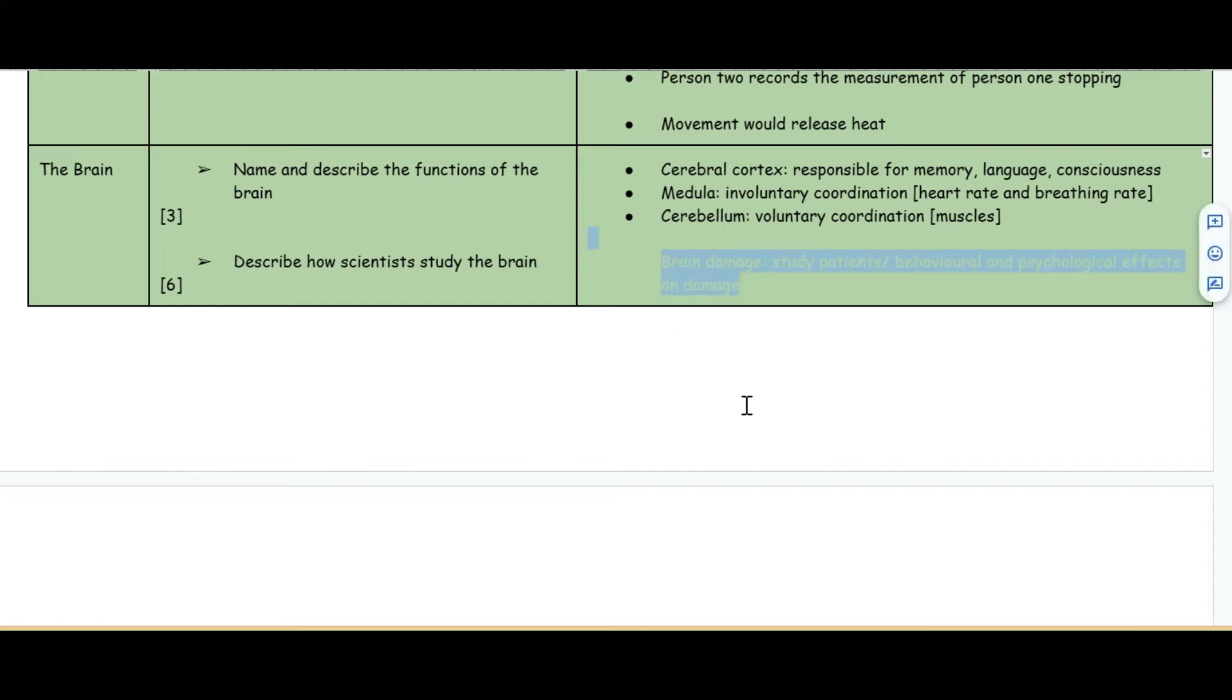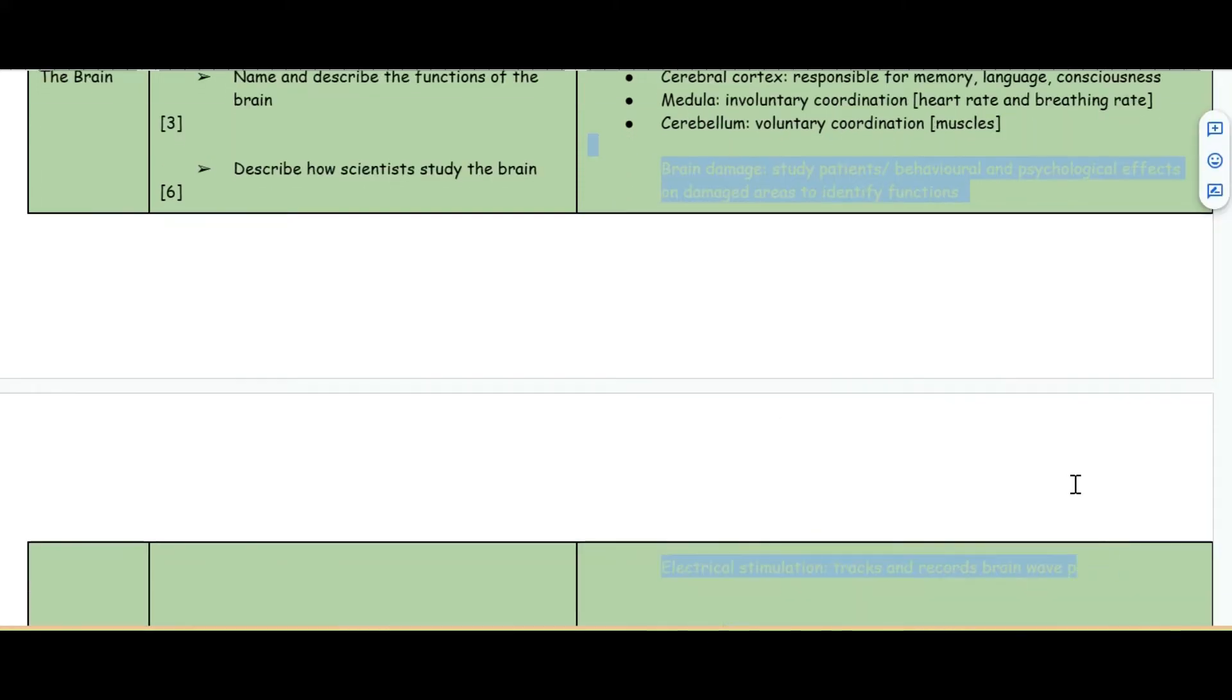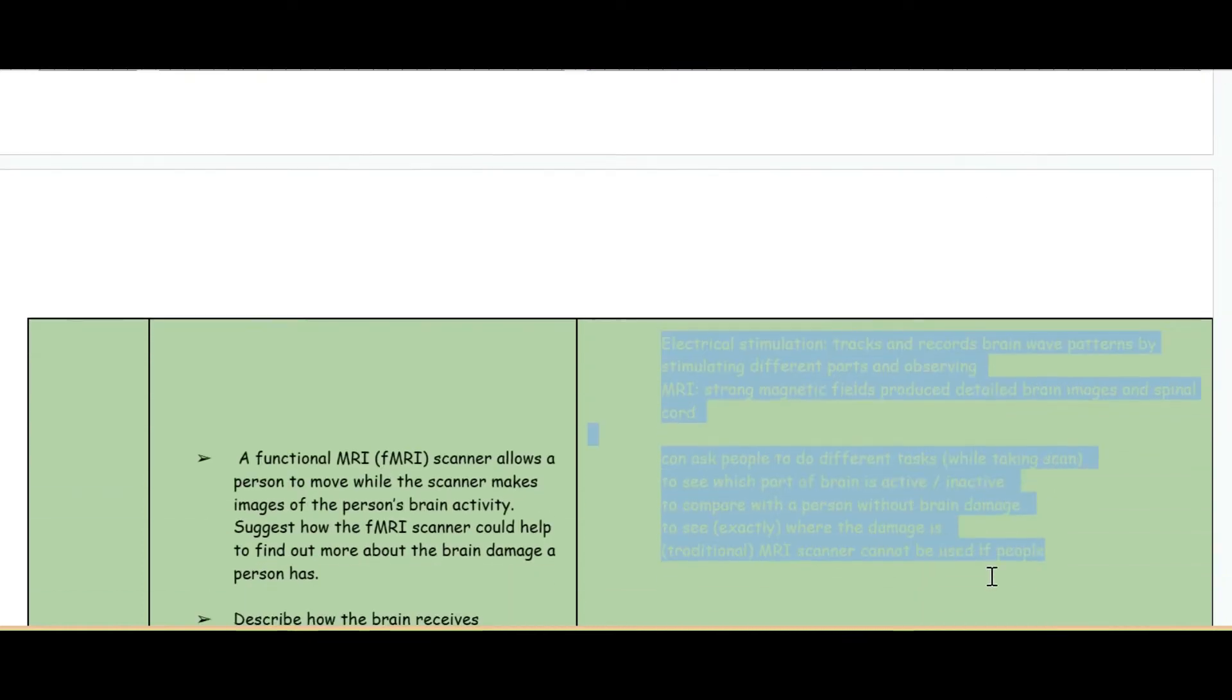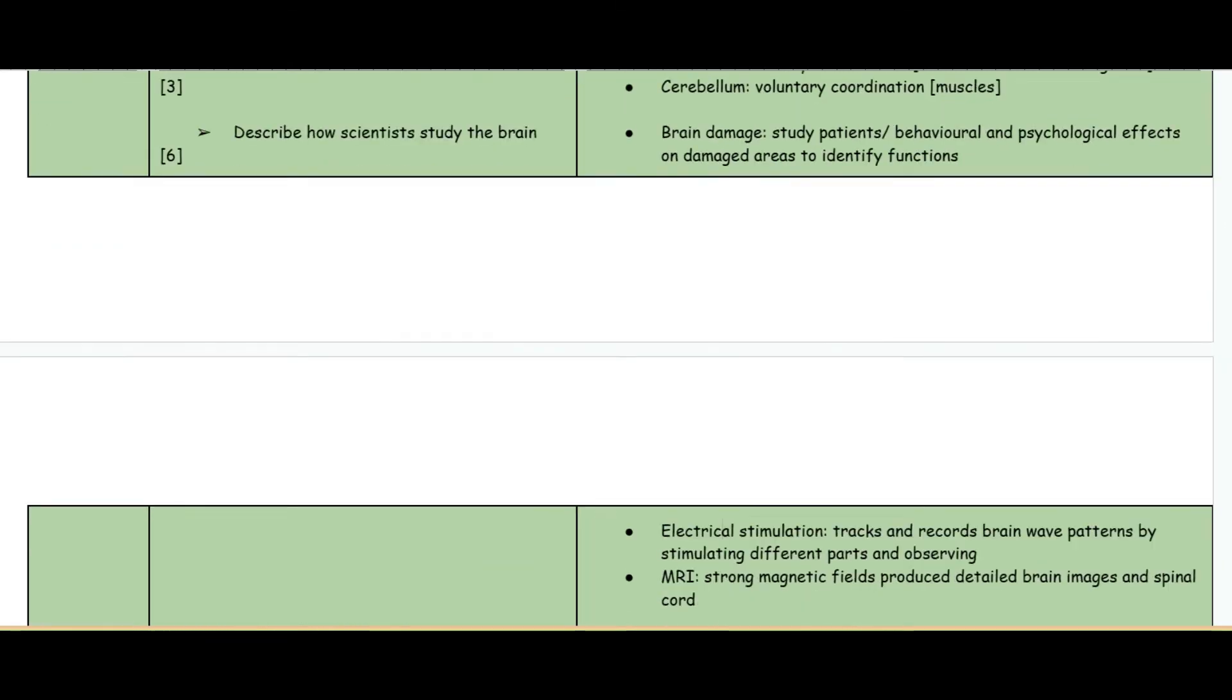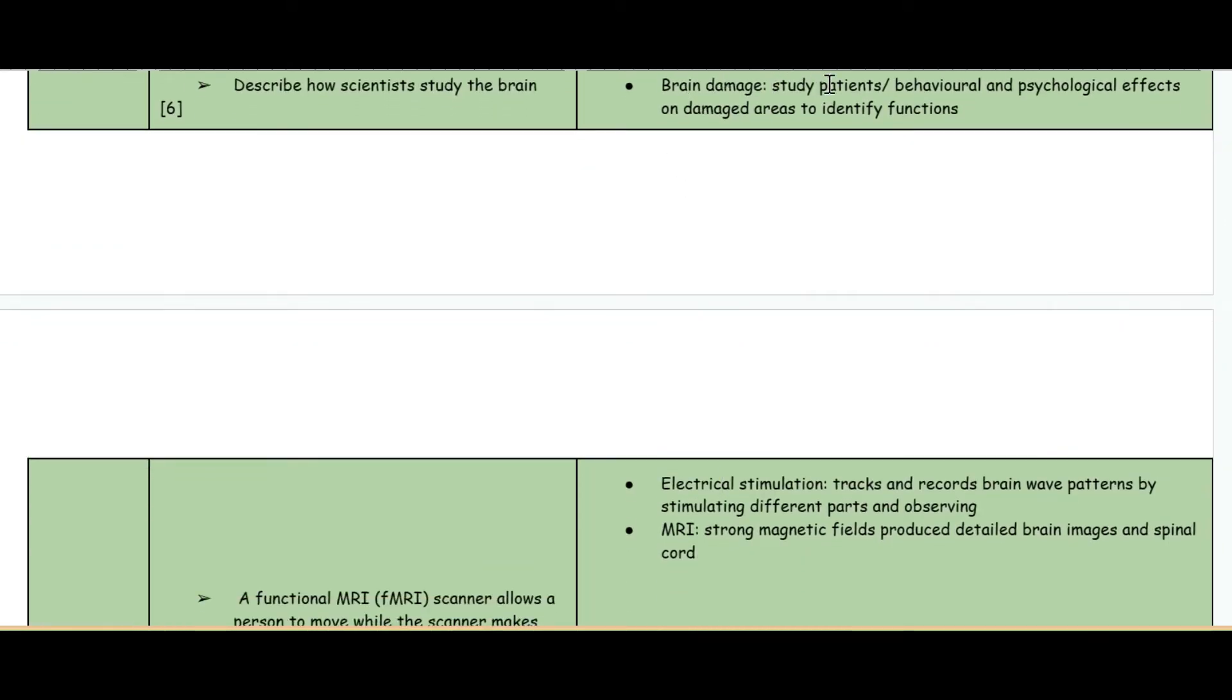The next question: describe how scientists study the brain. Three different ways are electrical stimulation, MRI, and brain damage. Firstly, studying patients which have brain damage, looking at behavioral and psychological effects on those damaged areas and identifying the functions. For example, if you look at somebody who has damage in a certain part of their brain and look at the effects, then you know what that part of the brain was responsible for.